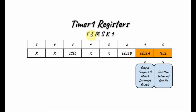The timer interrupt mask register for Timer 1 (TIMSK1) is used to enable or disable Timer 1 interrupts. One bit is used to enable the overflow interrupt, and another is used to enable the compare match interrupt. The remaining bits are not used in this video and are assumed 0.